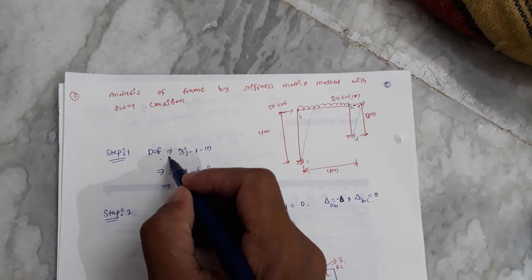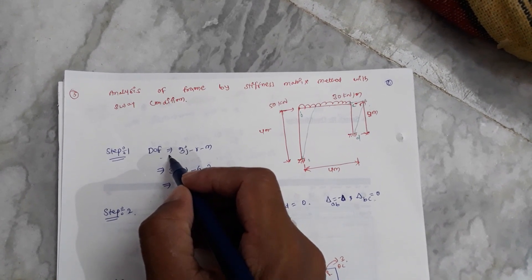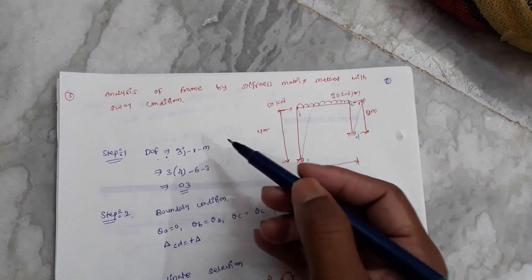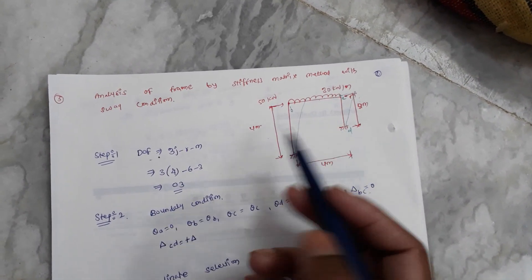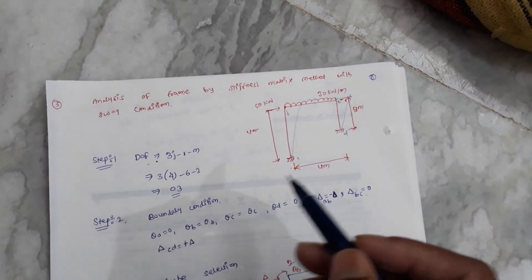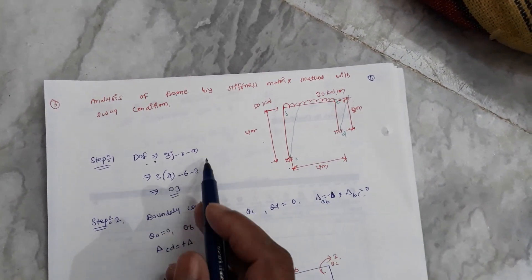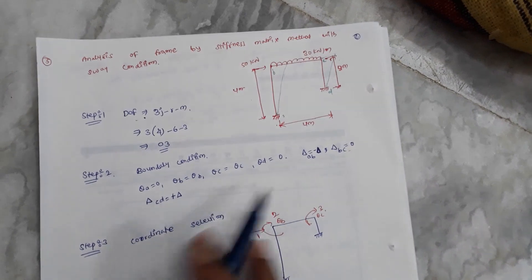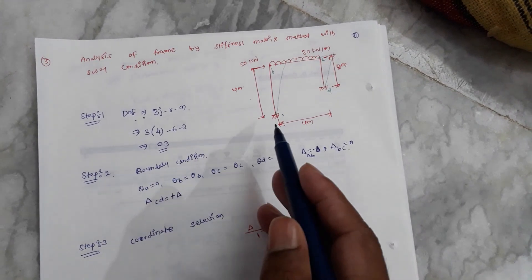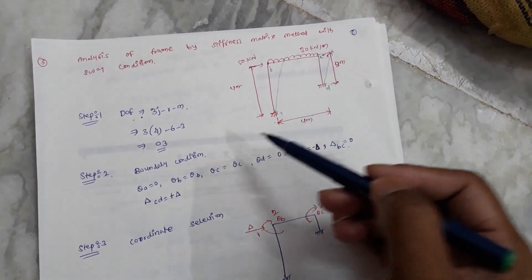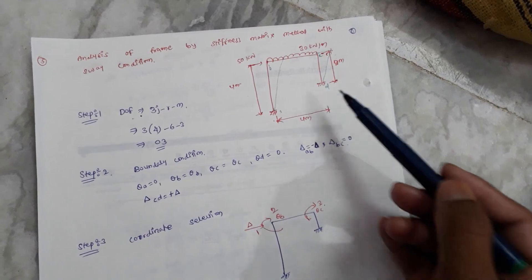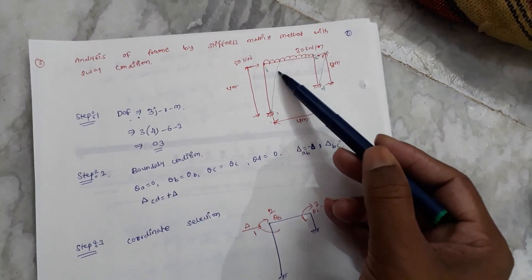Step one: we need to find the degree of freedom. Since the stiffness matrix method is a displacement method, we find unknown displacements using 3j minus m. We have 4 joints and 6 reactions — 3 plus 3 — and 3 members. Next, checking boundary conditions: theta at A equals zero (fixed support), theta B and theta C are unknown, and theta D equals zero.